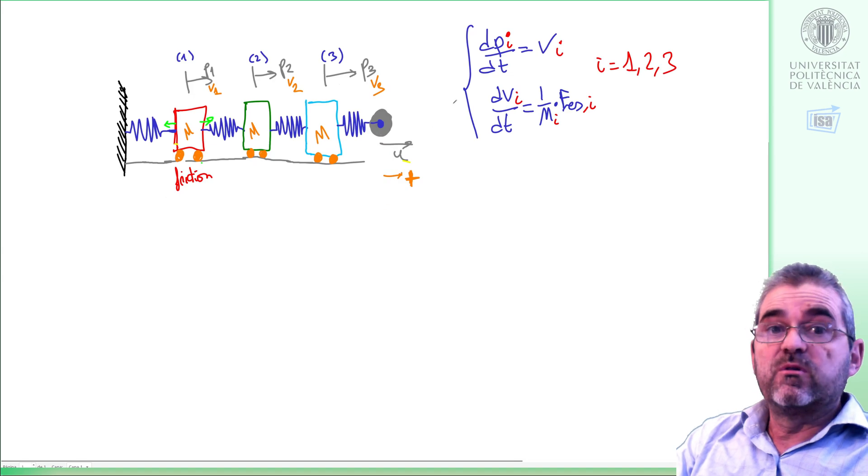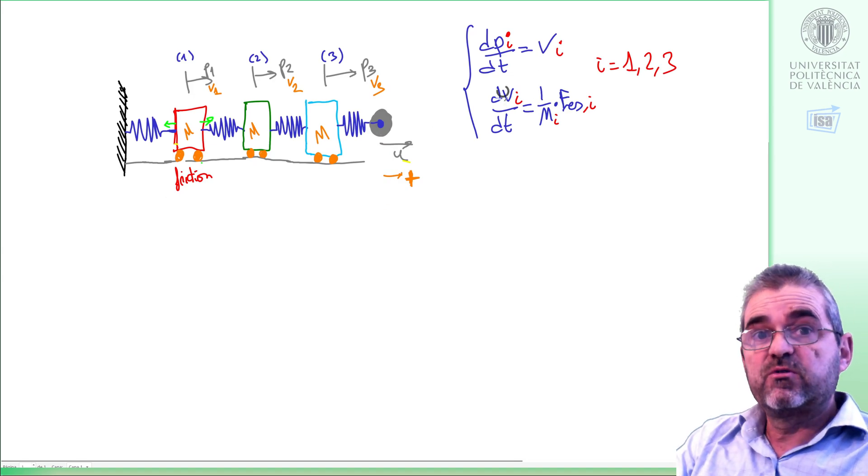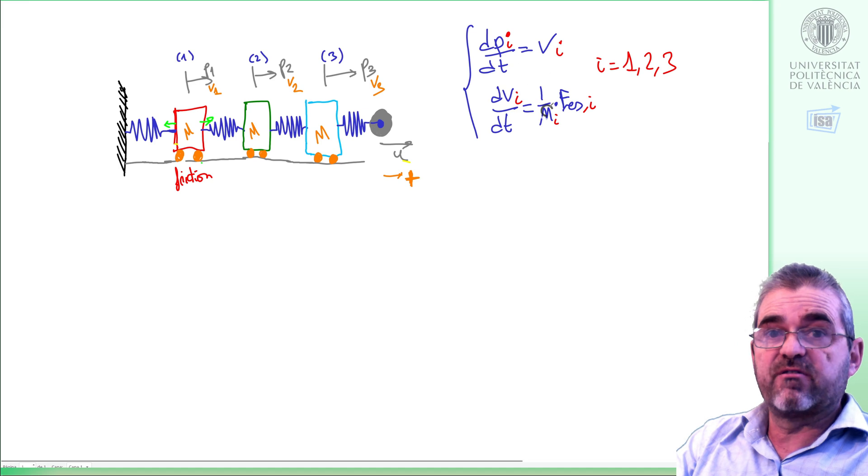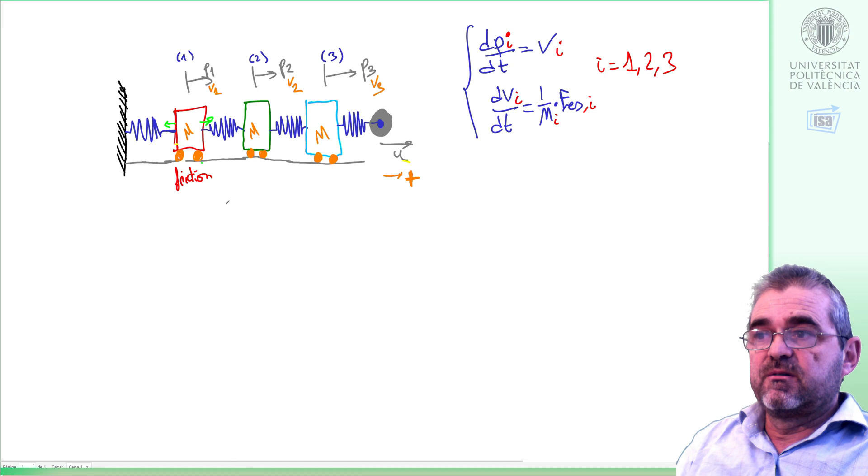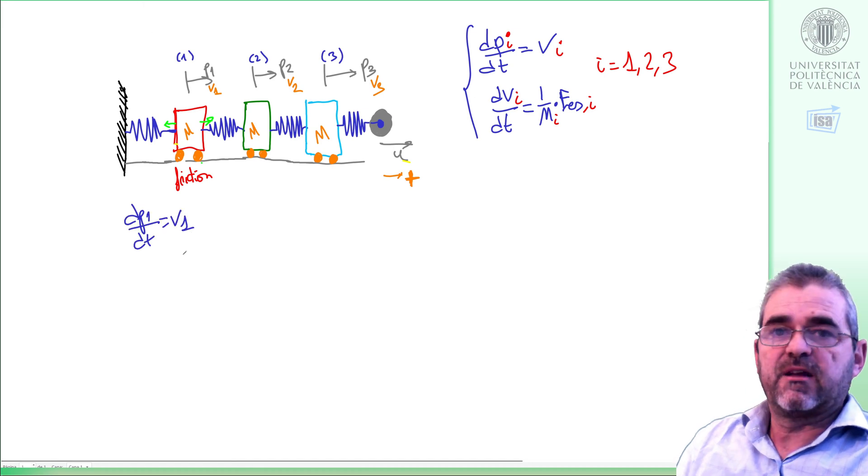So our model will be basically these six equations, two for each of the moving masses. Let's do it. First, we'll start like this.